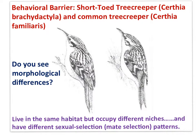Here's another example of behavioral isolation on the basis of coloration. There are two species of short-toed tree creeper that live in the same geographic area, but because of differences in the patterning of color on their wings, the two groups have become reproductively isolated, becoming separate species in the same geographic area — sympatric speciation.